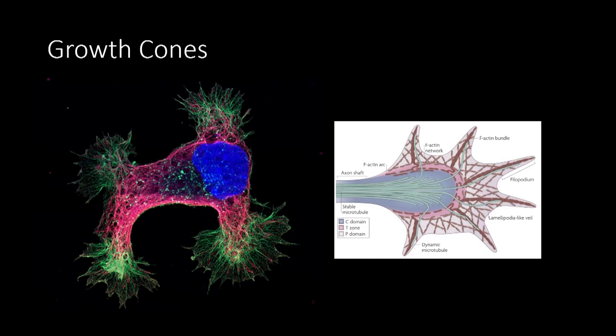When neurons are developing, they send out axonal processes. To guide them to their synaptic targets, there's a highly specialized structure called the growth cone — the guidance machinery of the neuron. This structure is extremely dynamic, actin-rich, and responsible for sensing extracellular chemical cues, tactile cues, and other signals to guide it to its synaptic target.